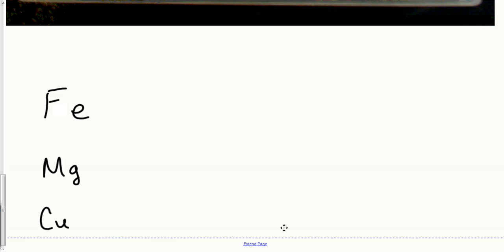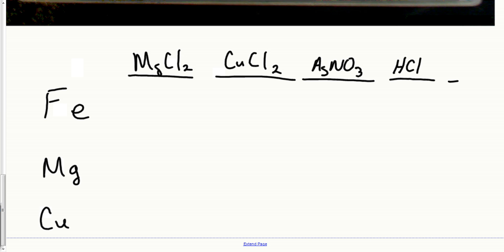We're going to be looking at those metals and then seeing how they react. The different solutions that we're going to be using is MgCl2, solutions of CuCl2. This is in your data tables already. I'm trying to remember, AgNO3, HCl.